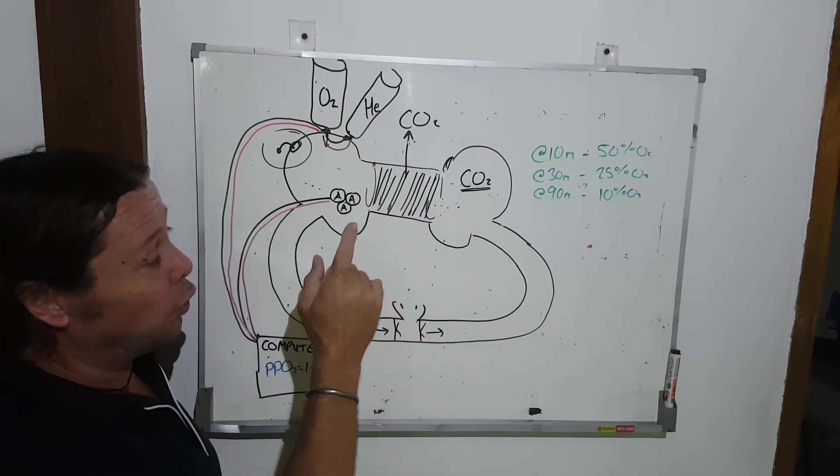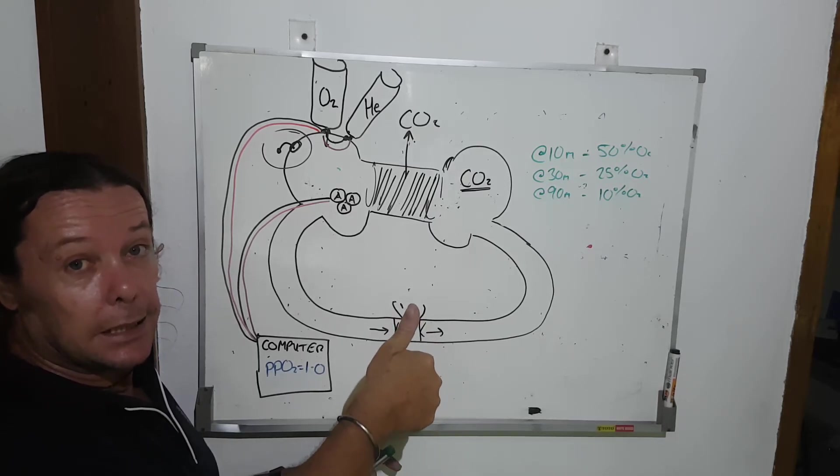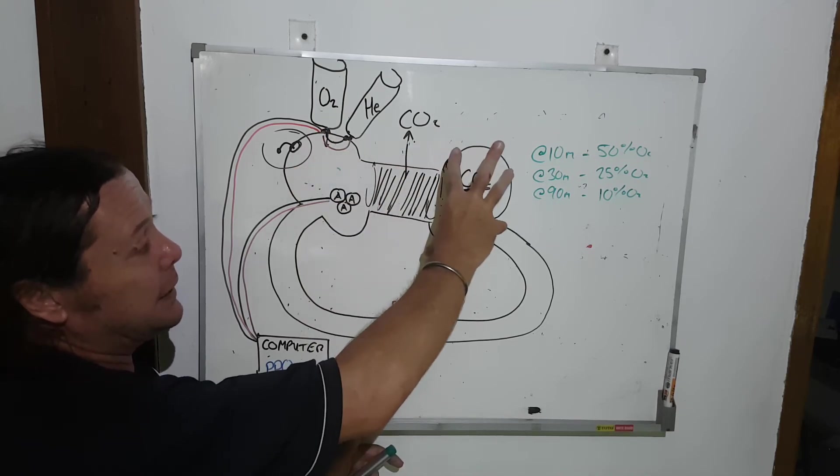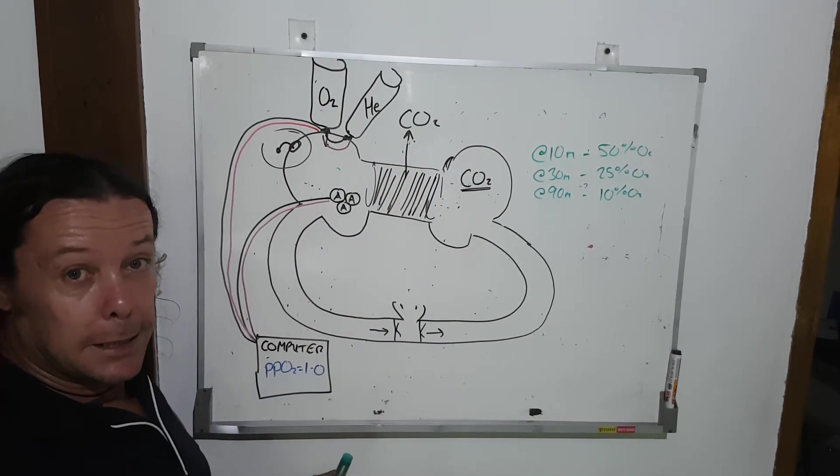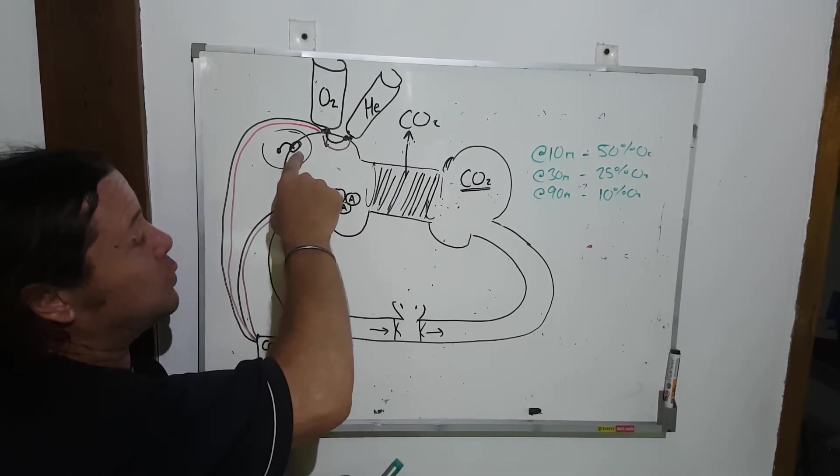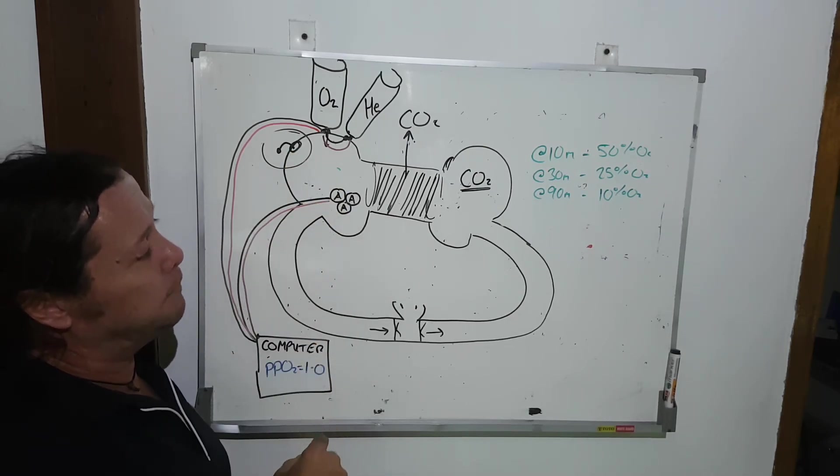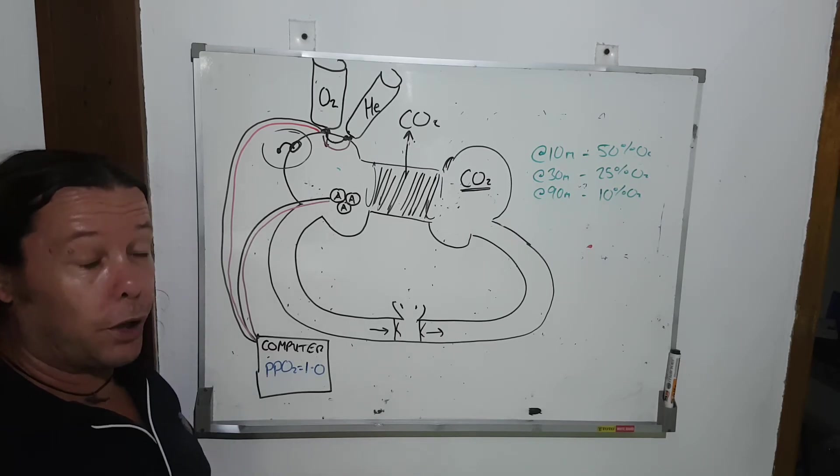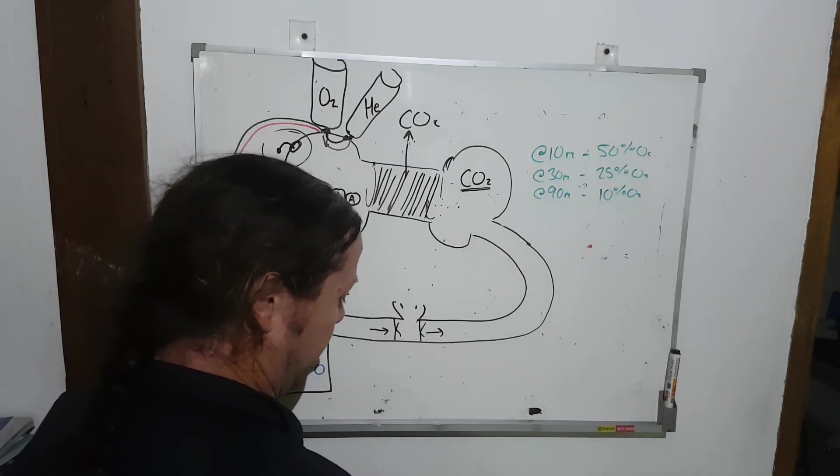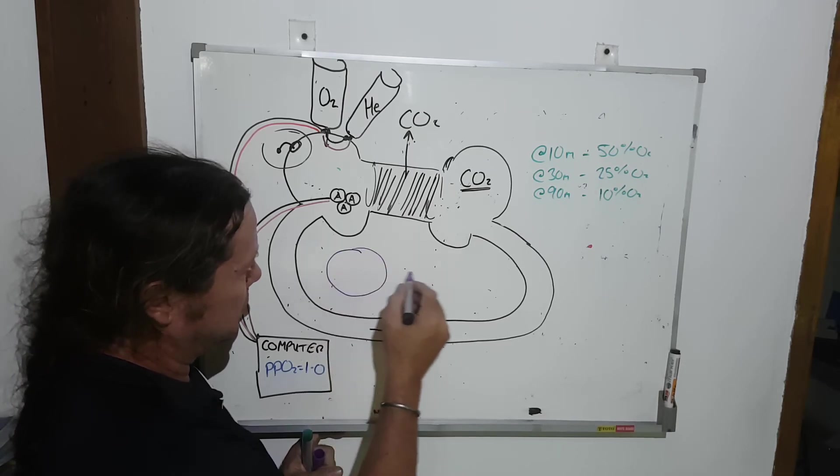The only time that this closed circuit rebreather is going to make bubbles is when I start to ascend, because physics says when I start to ascend, these flexible bags are going to expand and potentially go bang. So they need to allow that gas to escape. We still have a dump valve here, or a pressure relief valve here. Yeah, the other cool thing about rebreathers: if I put my me in here, the diver, my head is here. This is one of my lungs, and this is the other one.